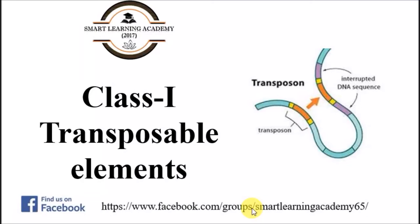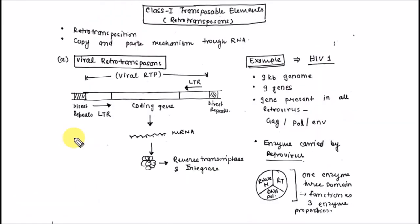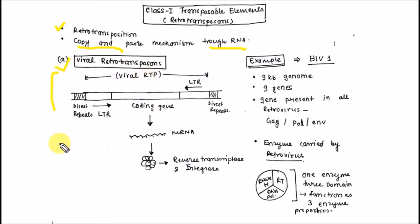Welcome to Smart Learning Academy. In this video tutorial, I am going to discuss about Class 1 transposable elements, also known as retrotransposons. As discussed in my previous video, retrotransposons can be present only in eukaryotes and in viruses. The mechanism of action of retrotransposons is retrotransposition, and it works with a copy and paste mechanism through RNA or mRNA.